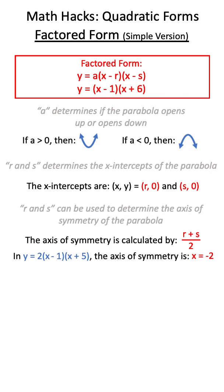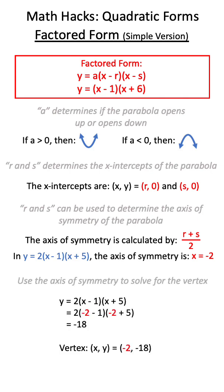The axis of symmetry gives us our x-value of our vertex. Therefore we can substitute it in to solve for our y-value and the full vertex.